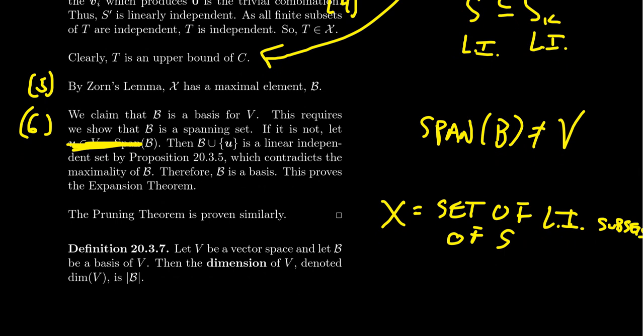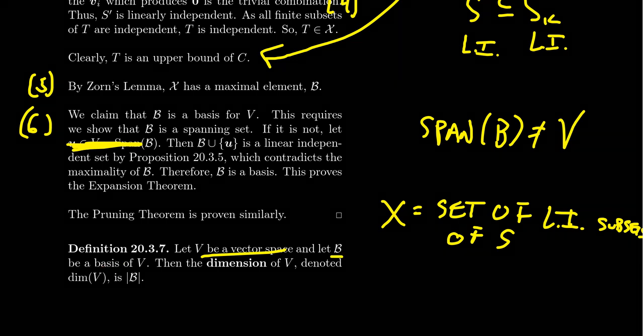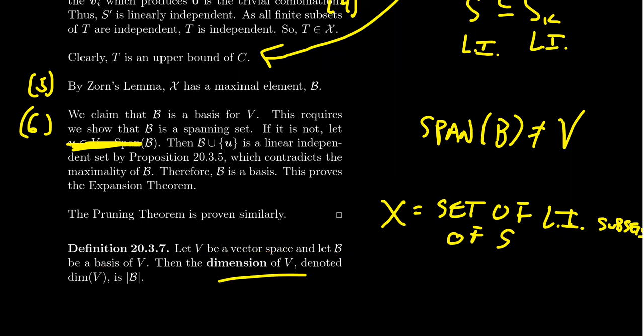Now that we have the notion of basis and know every vector space has a basis, we can talk about the dimension of a vector space. A vector space V with a basis B: the dimension of the vector space, denoted dim(V), is the cardinality of a basis. Since every vector space has a basis this definition makes sense. But is it well-defined? If I take two different bases, does their cardinality always match up? We'll prove in the next lecture that all bases have the same cardinality, and therefore dimension is a well-defined notion.